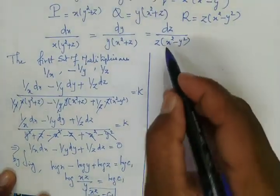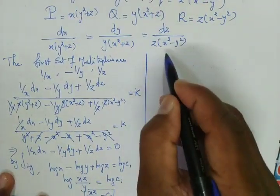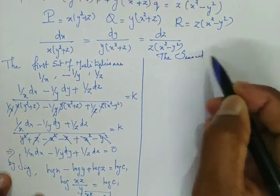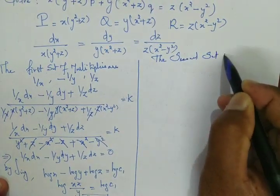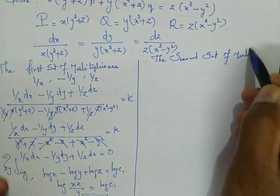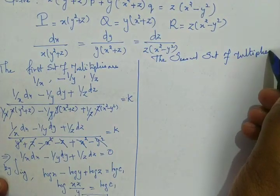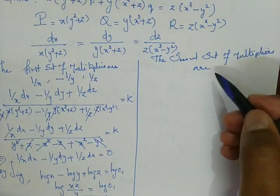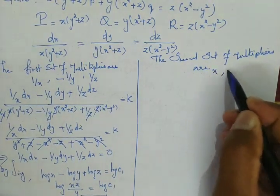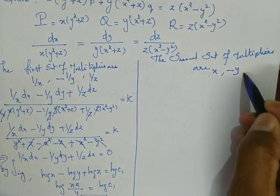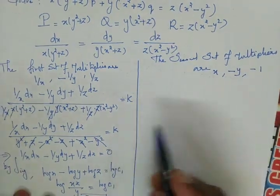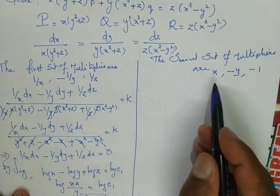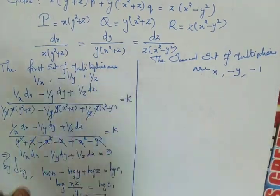Now we select the second set of multipliers. The second set of multipliers are x, -y, -1. These multipliers make the denominator zero.